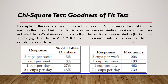For the chi-square goodness of fit test, researchers conducted a survey of 1,600 coffee drinkers asking how much coffee they drink, in order to confirm previous studies. Previous studies indicated that 72% of Americans drink coffee. The question is: at a level of significance of 0.05, is there enough evidence to conclude that the distributions are the same?